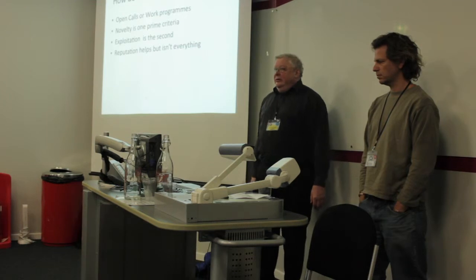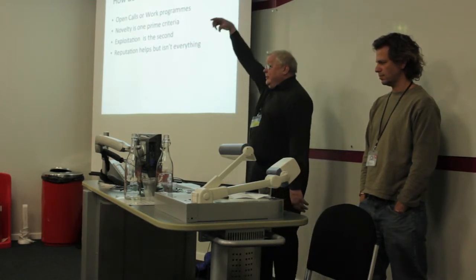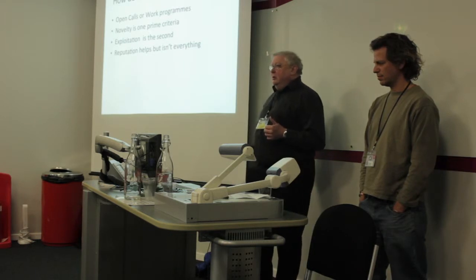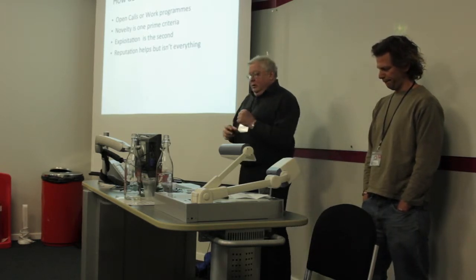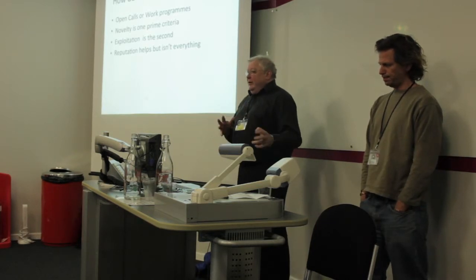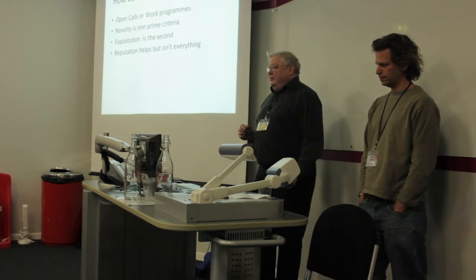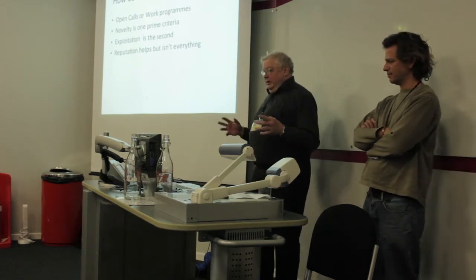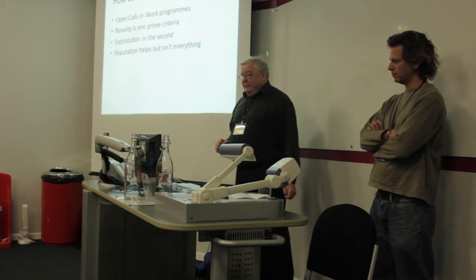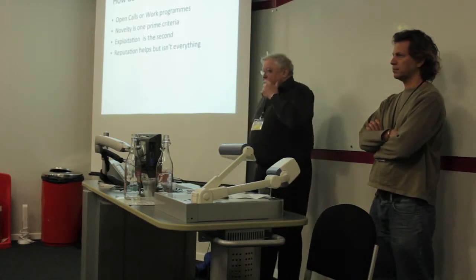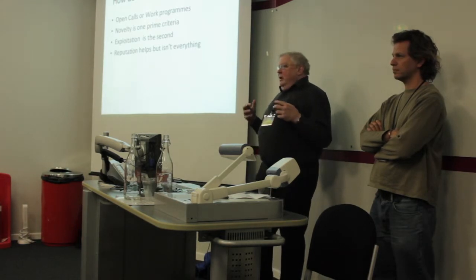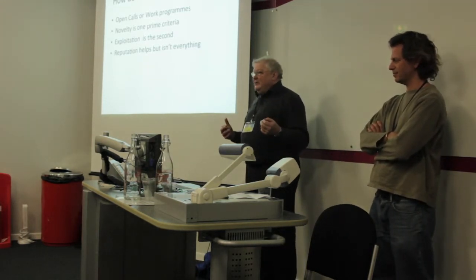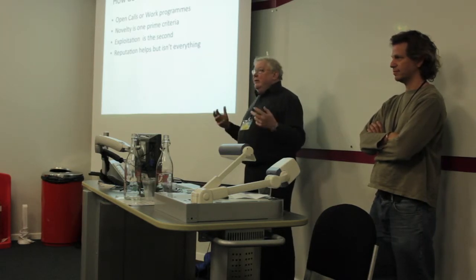How do they choose what to fund? There are two sorts of schemes to apply for. One is an open call, where it says we're looking for ideas. The other is a work programme that defines specifically what needs doing — for example, the development of computer networks in the 8 to 12 gigahertz bandwidth. There are really two criteria. One is novelty — no one is going to fund something which has already been done before. No one's going to fund any of you to copy something that already exists.